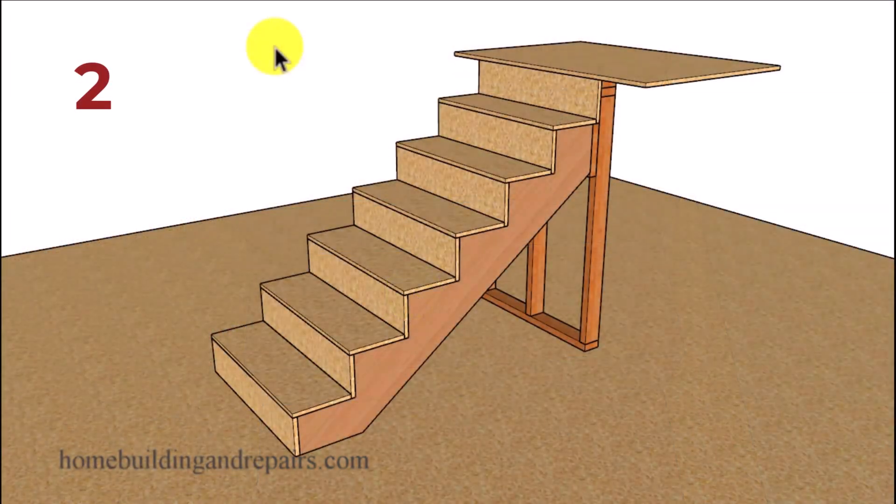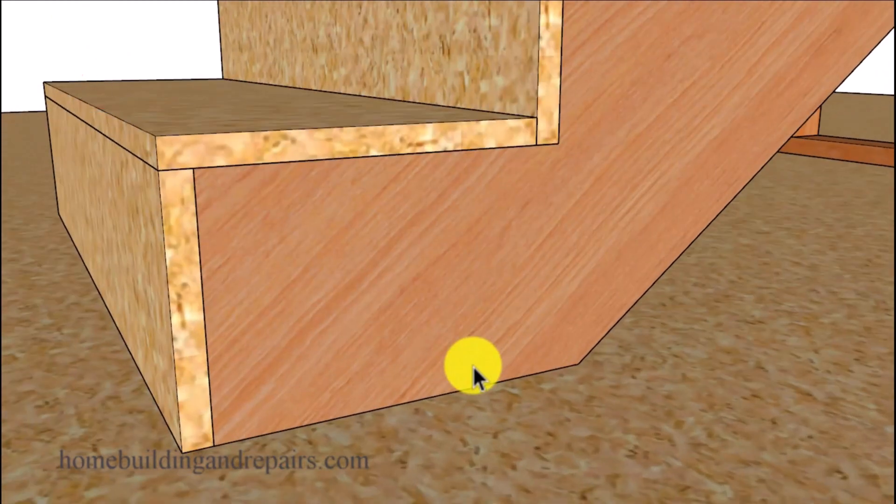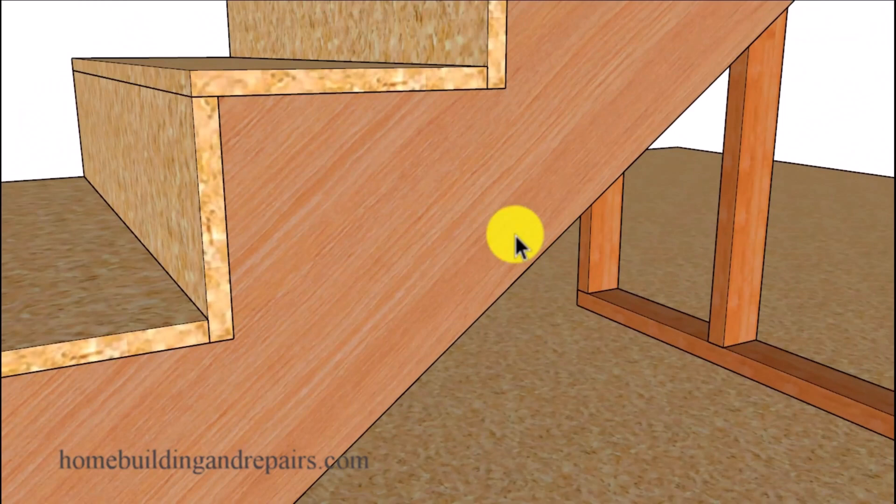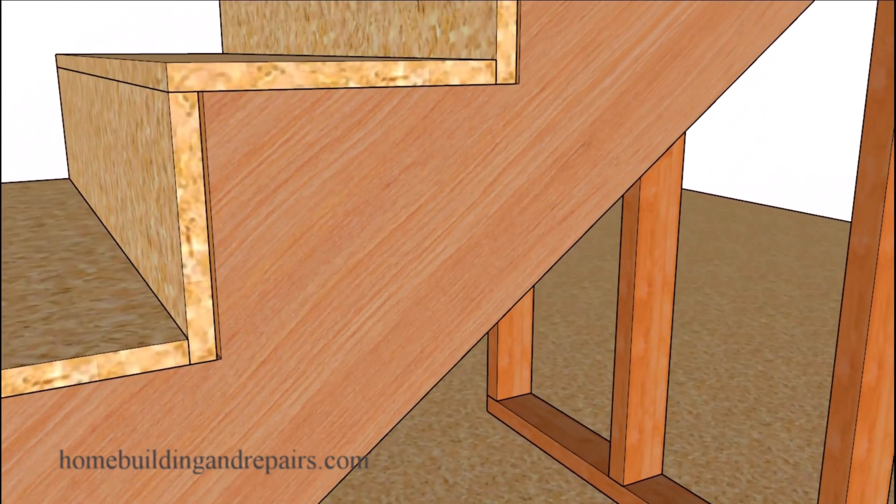One of the biggest problems you're going to have reusing old stair stringers will be the fact that the lumber shrinks. And I've seen a two by twelve shrink up to three eighths of an inch before off of the width. And there's a high probability that that's what's going to happen to your existing stair stringers, especially if they're located outside.